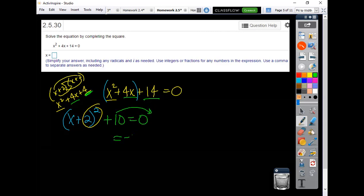Then subtract 10 to the other side. Then square root both sides. Don't forget your plus or minus. So I've got x plus 2 equals a positive or negative square root of negative 10.